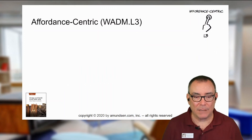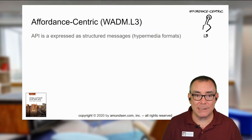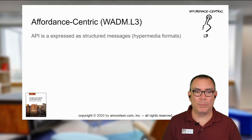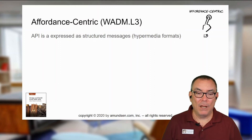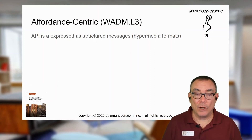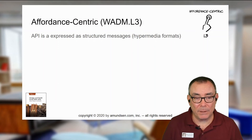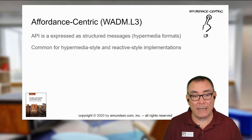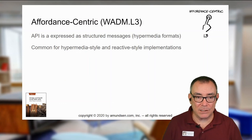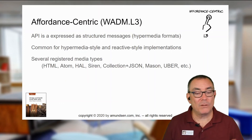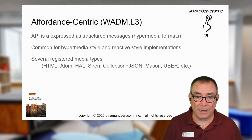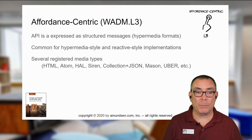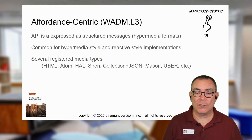HTML and Uber and Collection+JSON and Siren and HAL and all these other ones are really, really common in this space. React style also works very similar to this — I have certain actions that I know I can pass, I describe them and send messages back and forth. There are lots of media types that are registered to support this kind of work. HAL is used by the Amazon system; I've seen lots of Siren and Collection+JSON; Atom is used a lot by Microsoft tooling. This is an ALPS — Application Level Profile Semantics — document, which focuses on describing elements and actions, so properties and actions all add up to a very much affordance-centric way of thinking about these things.